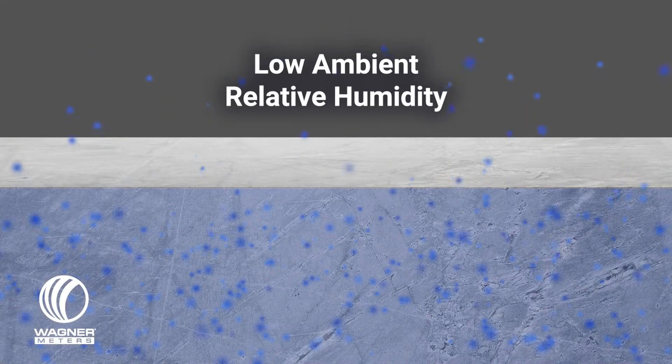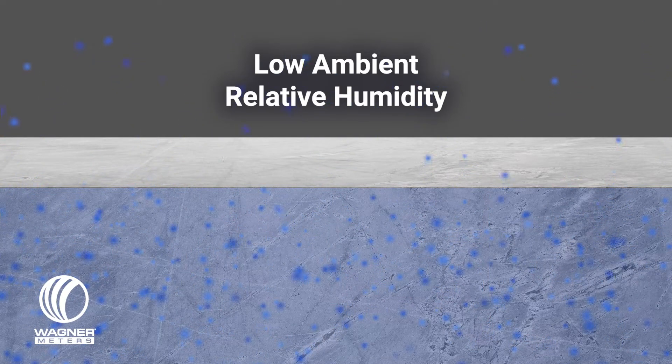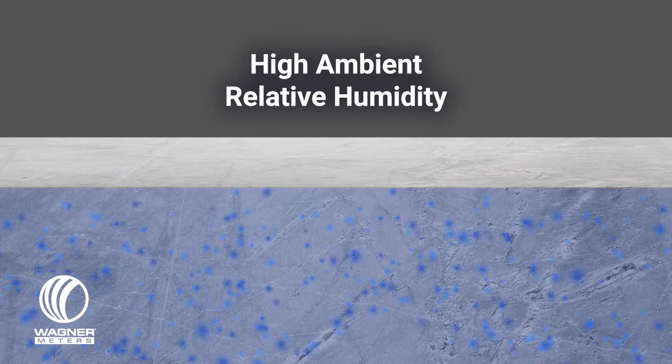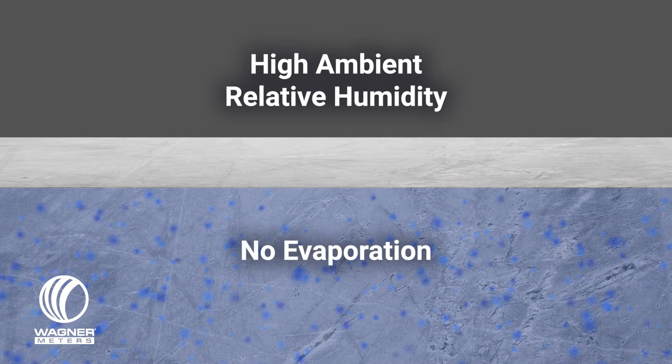And when does this evaporation stop? It all depends on the humidity of the surrounding air. As long as the surrounding air can hold more water and is at a lower humidity than the concrete itself, the concrete moisture will continue to evaporate. But if the humidity of the air is too high, then the water in the concrete won't evaporate and will stay inside the concrete — the evaporation and drying process stops.